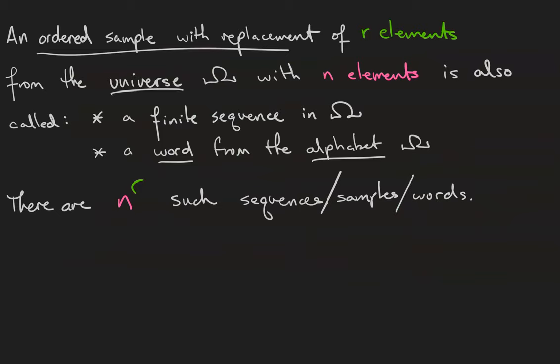That leads us to the idea of an ordered sample with replacement. These are also called finite sequences and words from the alphabet omega. When the size of the universe is n and the size of the sample is r, there are n to the r such sequences, samples, or words.